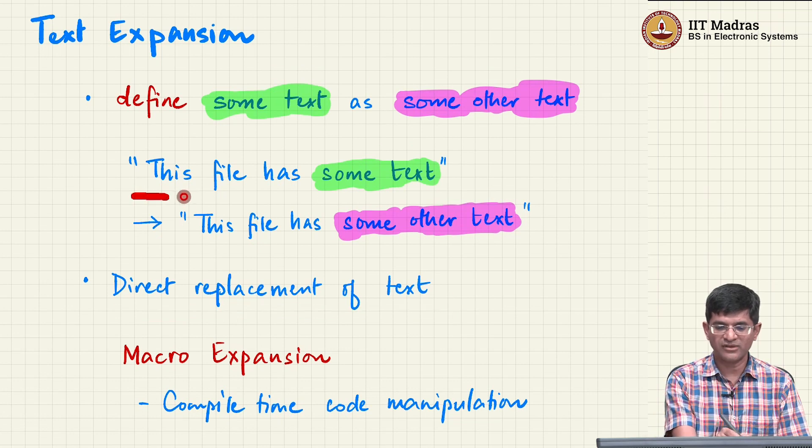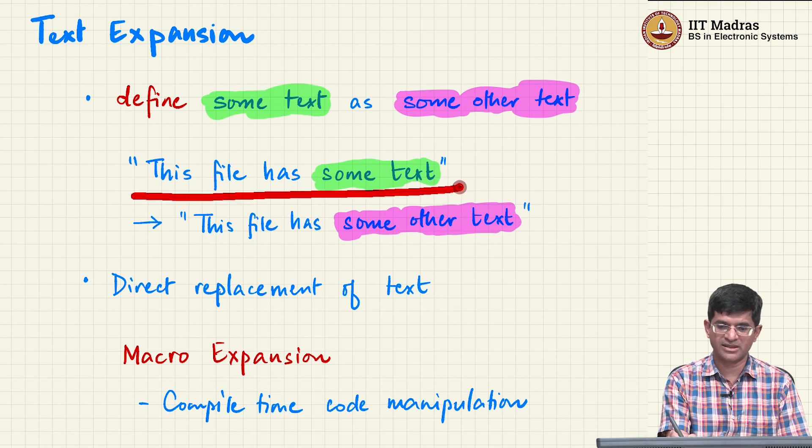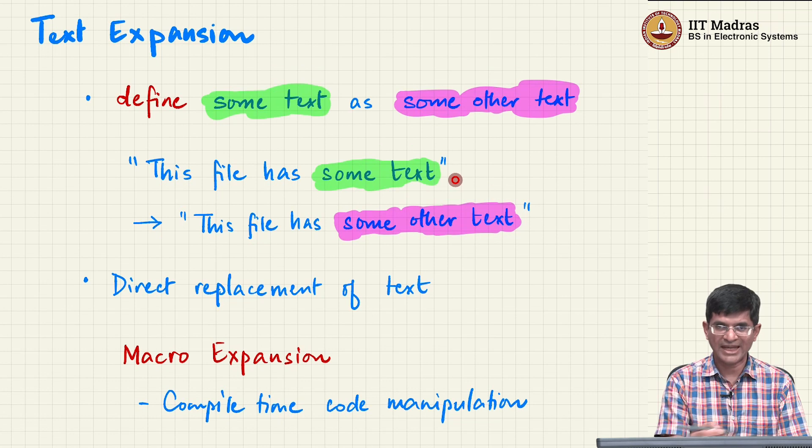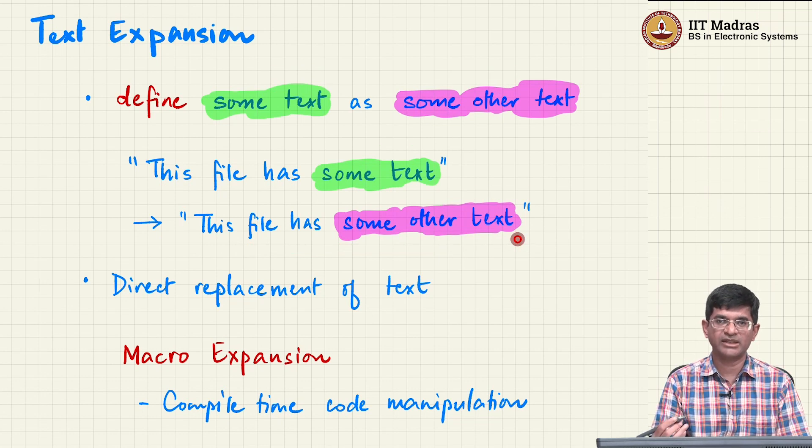In other words, if I have a string somewhere in my file that contains the letters 'this file has some text', after I go through the preprocessing stage, that line of text would have altered into 'this file has some other text'. It is literally a direct replacement of the text, and this is important which is why I am emphasizing it.